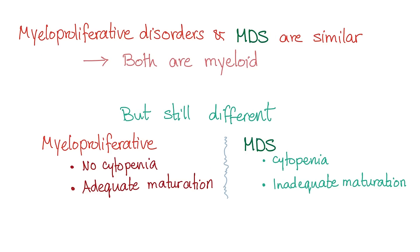Don't confuse myeloproliferative disorders and myelodysplastic syndrome. Both are myeloid, but they are different. In myeloproliferative disorder, there is no cytopenia. But in MDS, there is cytopenia. In myeloproliferative, there is adequate maturation. In MDS, inadequate maturation — dysplasia.